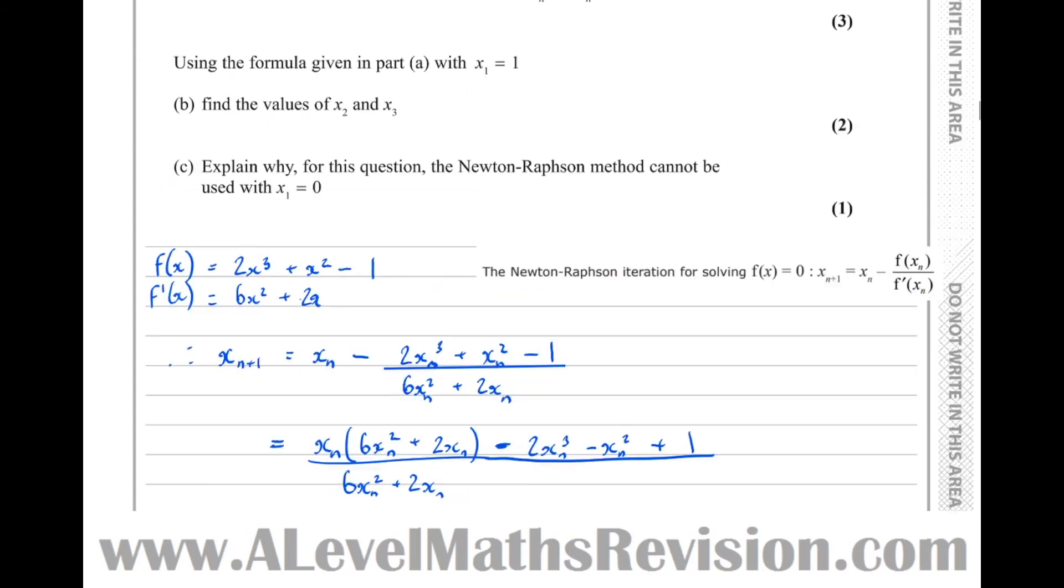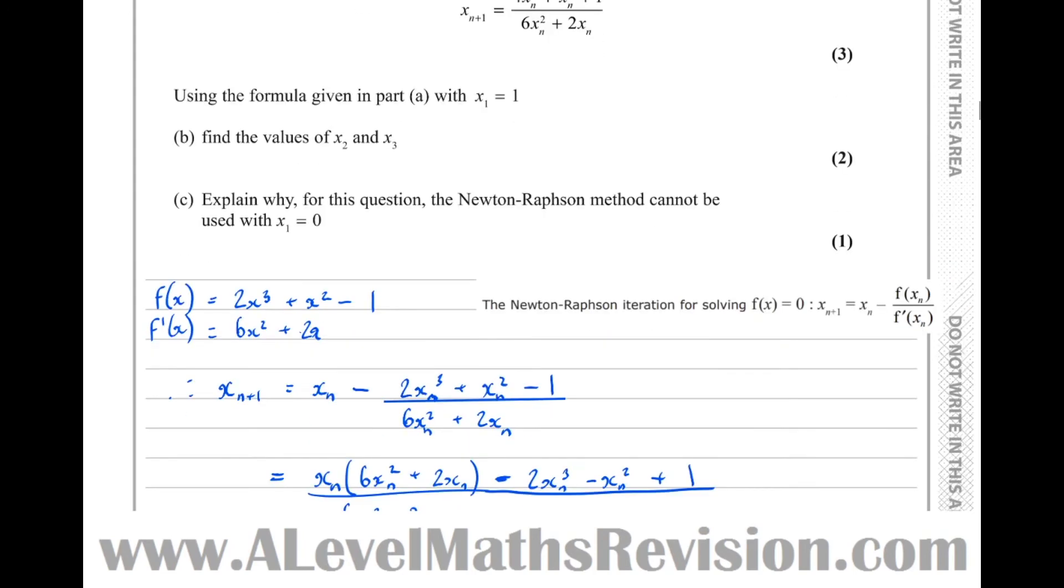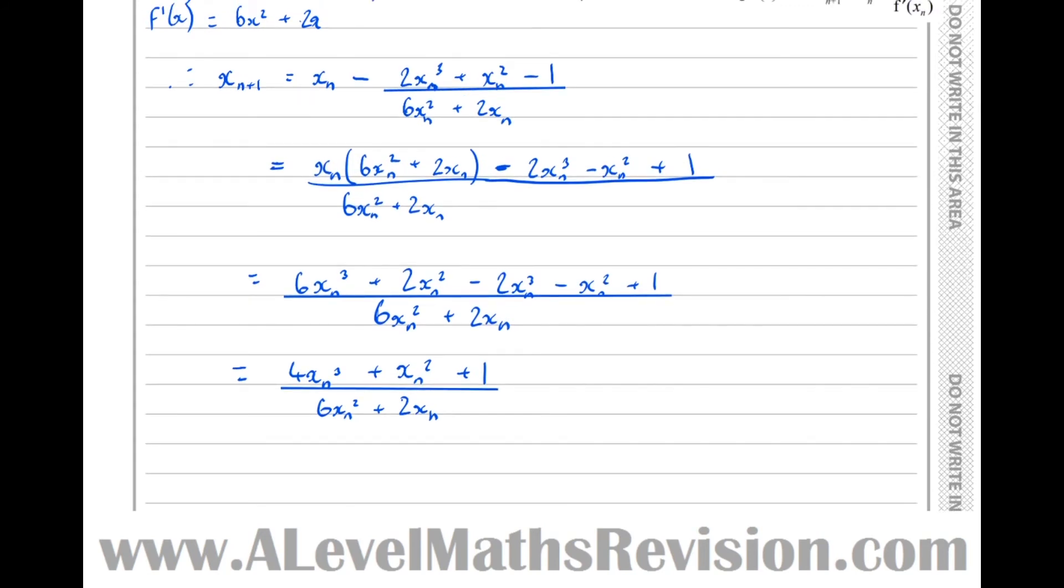Let's just check that matches the answer. Yeah, 4xn cubed plus xn squared plus 1 over 6xn squared plus 2xn, so we've shown it.